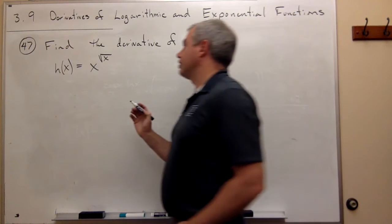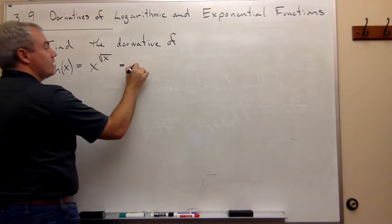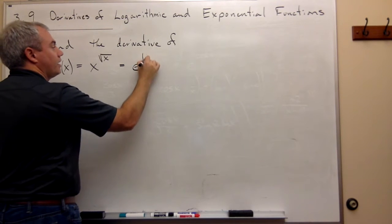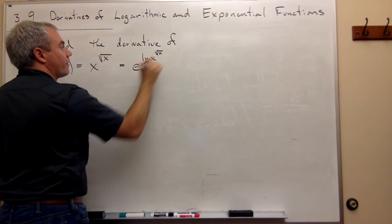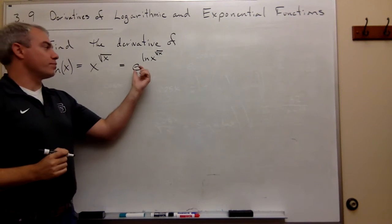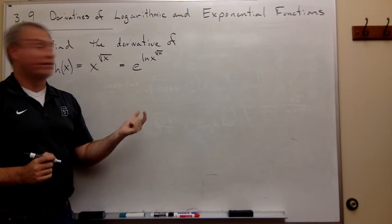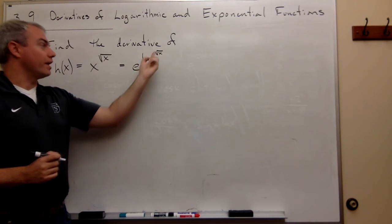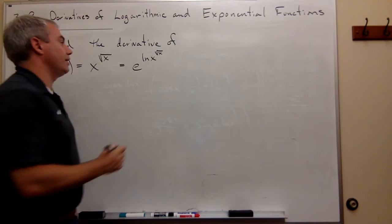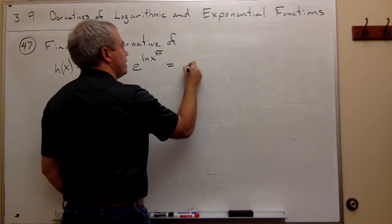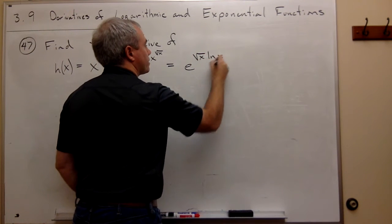So the way we're going to do that again is we're going to rewrite this as e to the ln of x to the square root of x. Because we know that e to the ln of something is just that thing, we can rewrite it this way. Now we can pull that square root of x out in front of the ln and rewrite this as e to the square root of x ln x.